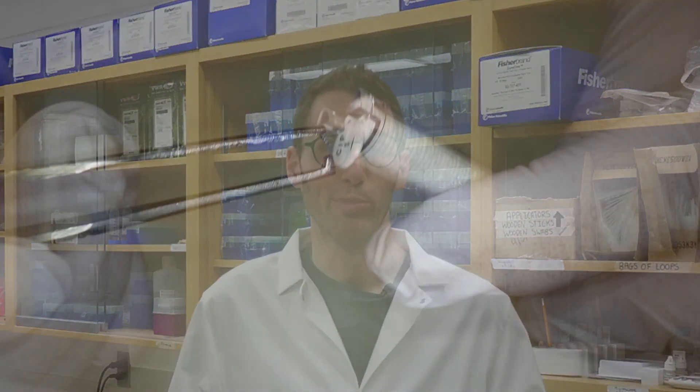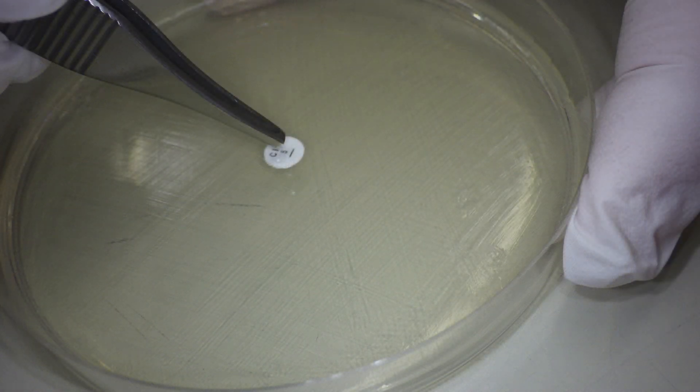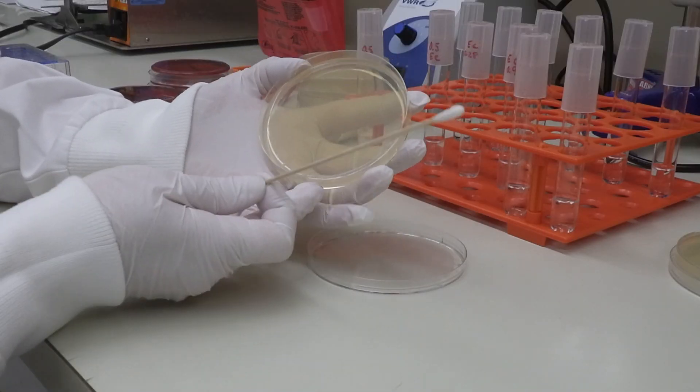The disc diffusion test is a simple assay for determining the antimicrobial susceptibility of a bacteria. I've previously put together a video showing the process of performing this test, but in today's video what I want to show you is what happens when the test is done incorrectly to really highlight the importance of standardization.